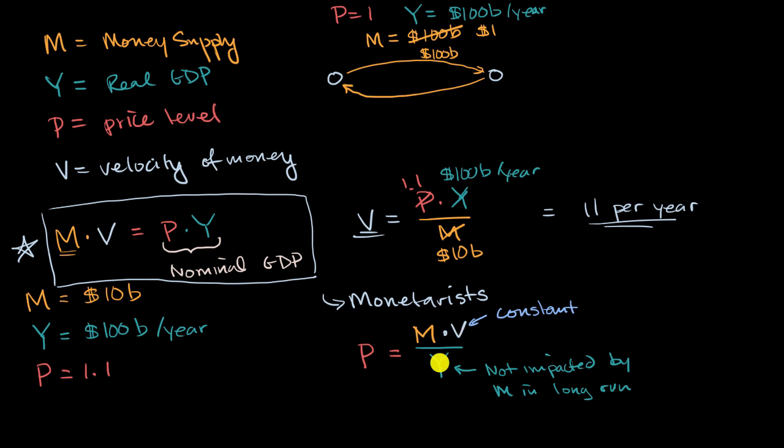Well, if you assume that these two things are relatively constant, well then you will see this direct relationship between your price level and the quantity of money. Now in practice, this is likely to be an oversimplification like most of our economics models.